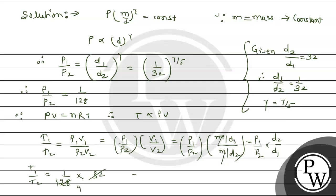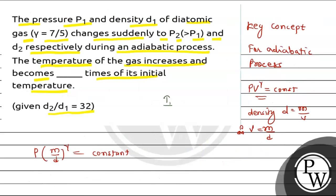The 32 cancels with 128 to give 4 times. So therefore T1 upon T2 equals 1 by 4, meaning T2 equals 4 times T1. The temperature of the gas increases and becomes 4 times of its initial temperature. I hope you understood it well. Best of luck, thank you.